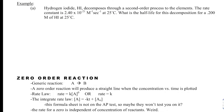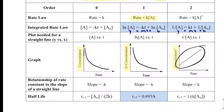In this first example, we are given hydrogen iodide, HI. It decays through a second order process to its elements — hydrogen and iodine. The rate constant is 2.4 × 10⁻²¹ per molarity per second at 25°C, which is the temperature at which the rate constant is valid. We are asked to solve for the half-life given an initial concentration of 0.2 molar HI.